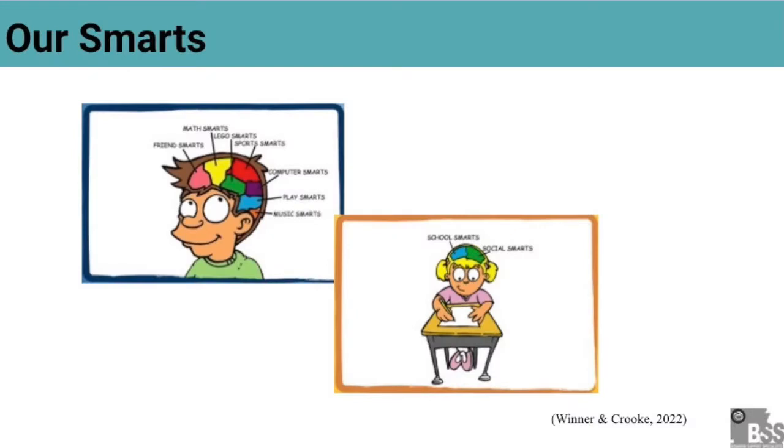We all have smarts like math, reading, writing, science, and even computer smarts for schoolwork. Social smarts is when we are around other people and use rules to interact with people. We use our social smarts like friend, play, and sports during tasks at school. The rules for friends and playing helps us learn while we are at school.